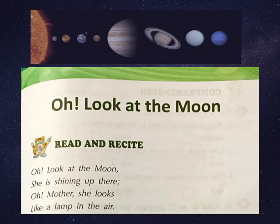This is a poem about the moon. Here, a child is saying to his mother: the moon is shining in the sky and it looks like a lamp in the air.